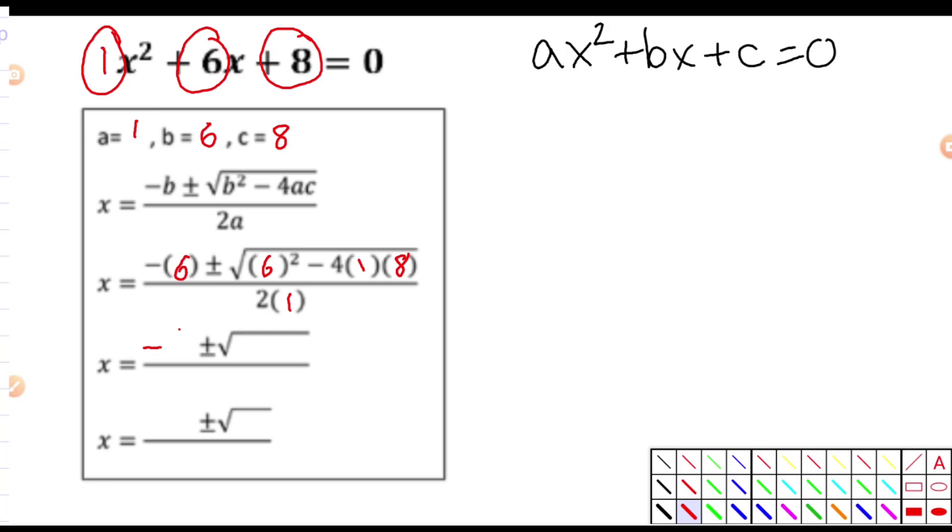So we have negative 6 plus or minus 6 squared. What is 6 squared? Well, that's 36. And then subtract 4 times 1 times 8. If you need a calculator to help you out with that one, go ahead. But that's 32. And then this divided by 2 times 1, which is 2. So look, not too bad. Just a couple of steps and we're able to work this out. And let's continue simplifying. So I'm going to simplify it underneath my radical right there. So I'm going to get negative 6 plus or minus. What is 36 subtract 32? Well, that's just 4. And then this is all divided by 2.